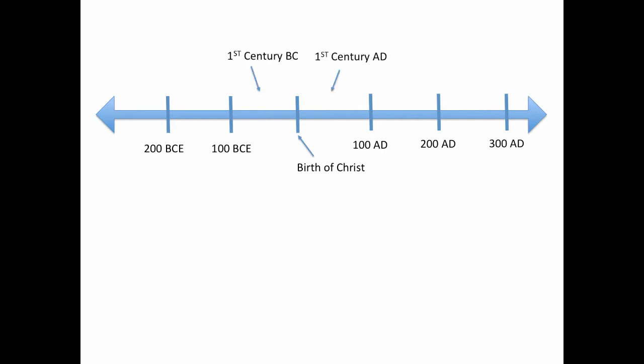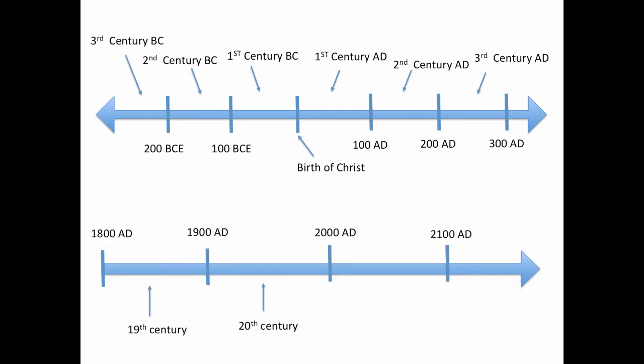So we have the first century AD — those 100 years from the year 1 until the year 100. And the first century BC, from the year 1 BC to the year 100 BC. The second century is from the year 101 AD until the year 200. The 19th century is those 100 years from 1801 to 1900, and the 20th century was from 1901 to 2000. So really, the year 2000 was in the 20th century, and the year 2001 is in the 21st century — those 100 years from 2001 to 2100. And then the 22nd century begins in 2101.